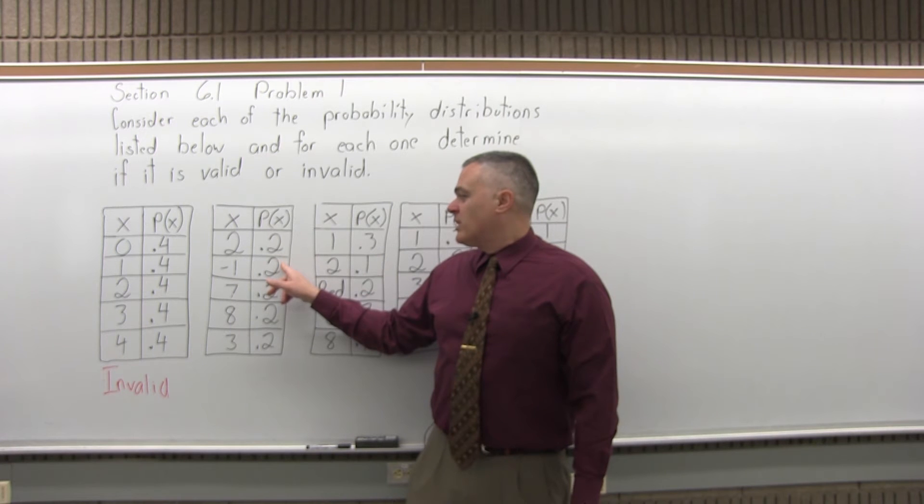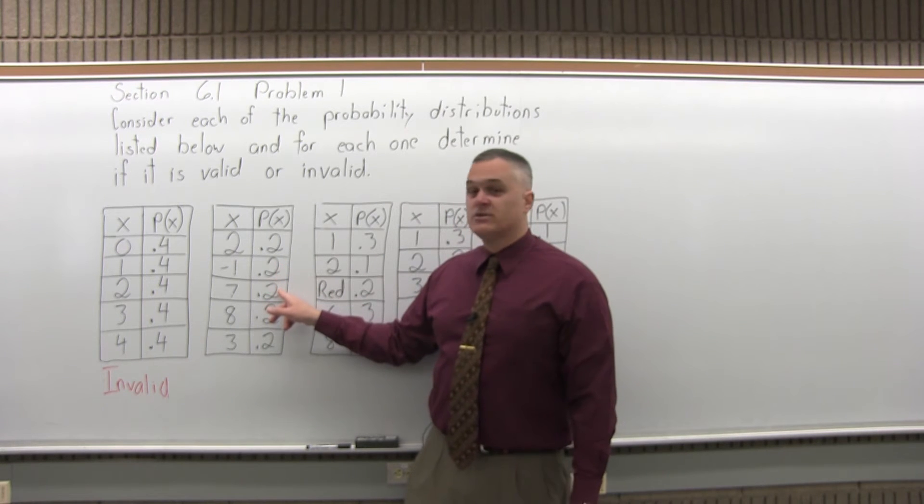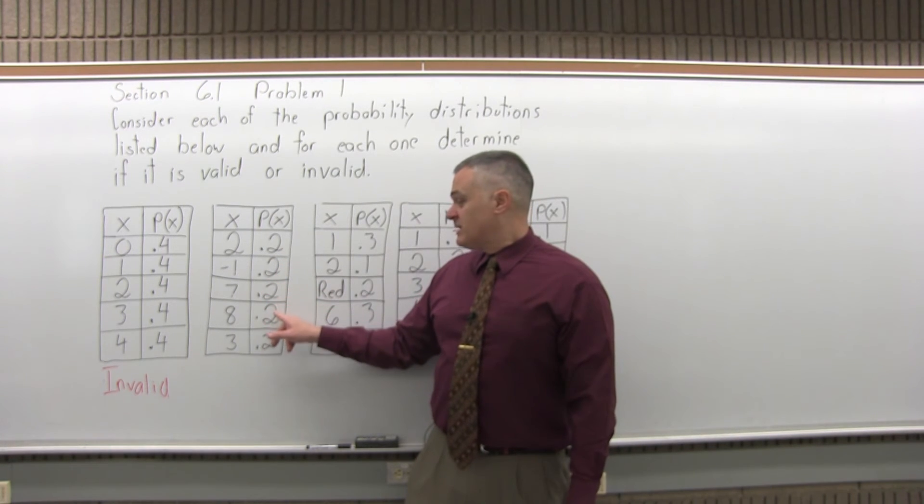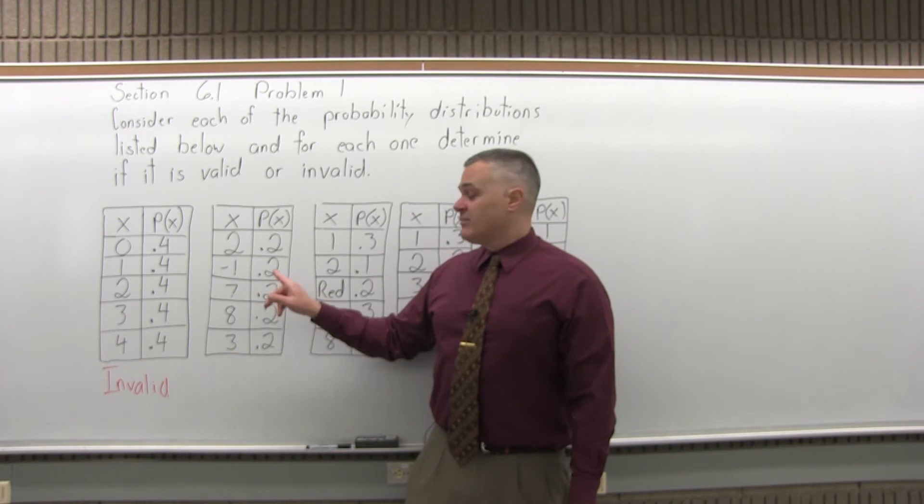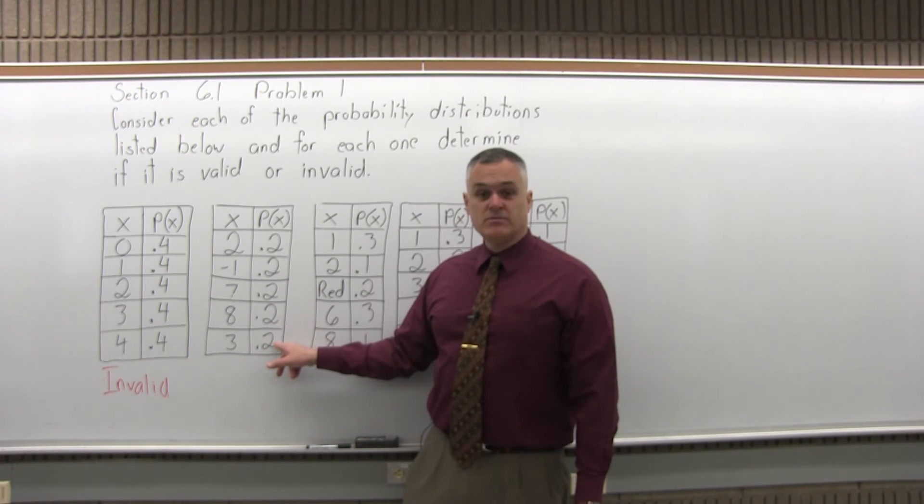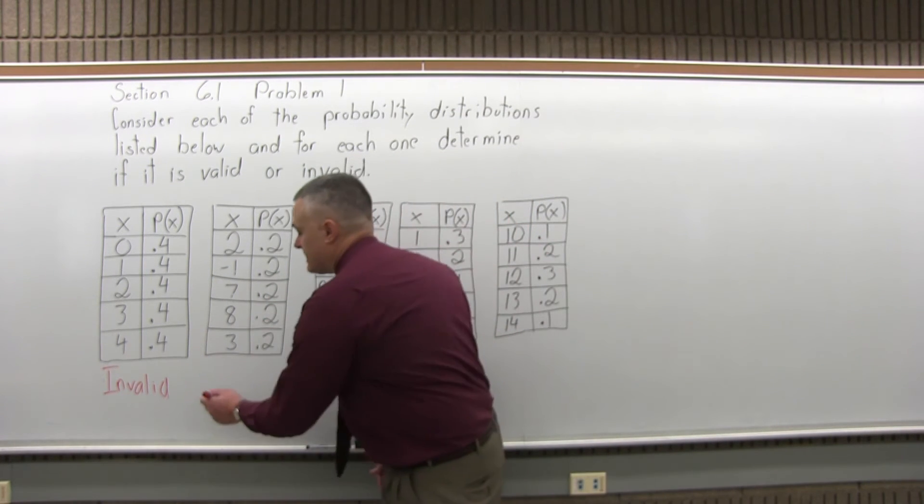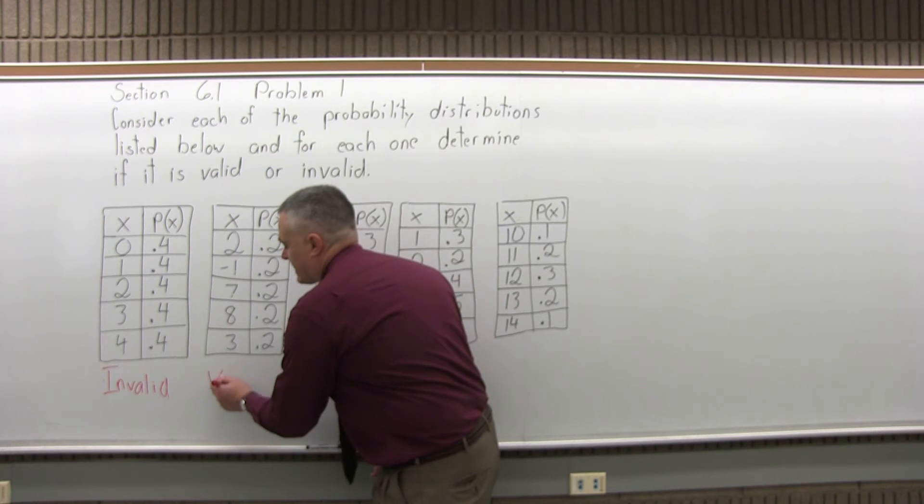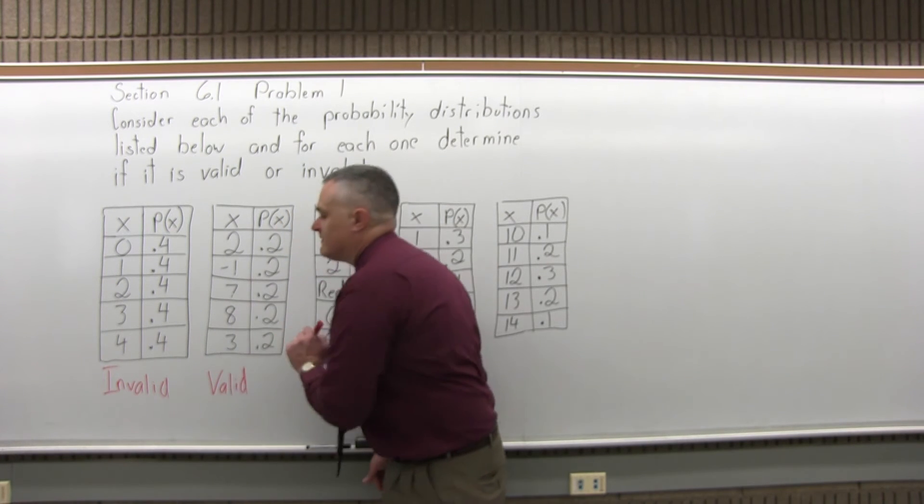0.2 and 0.2 is 0.4. 0.4 plus another 0.2 is 0.6, plus another 0.2 is 0.8, and plus the last 0.2 is 1.0. So all three rules are satisfied. So the second probability distribution is valid.